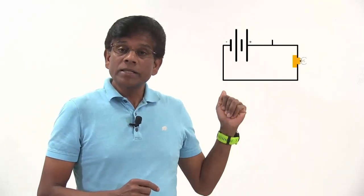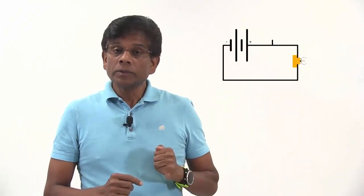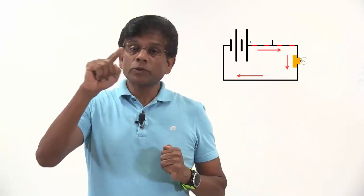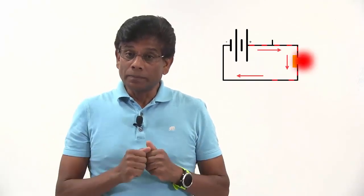To understand the phenomenon of short circuit, let's look at a simple electrical circuit consisting of a battery, switch and a bulb as shown here. You can see in this circuit, current flows from the battery to the bulb and the bulb lights up.